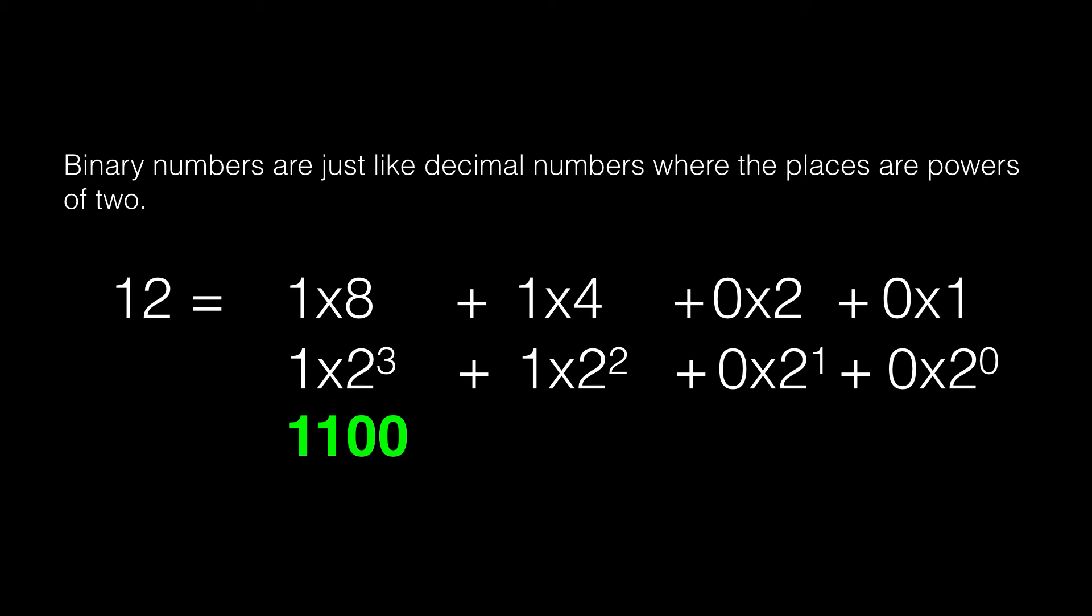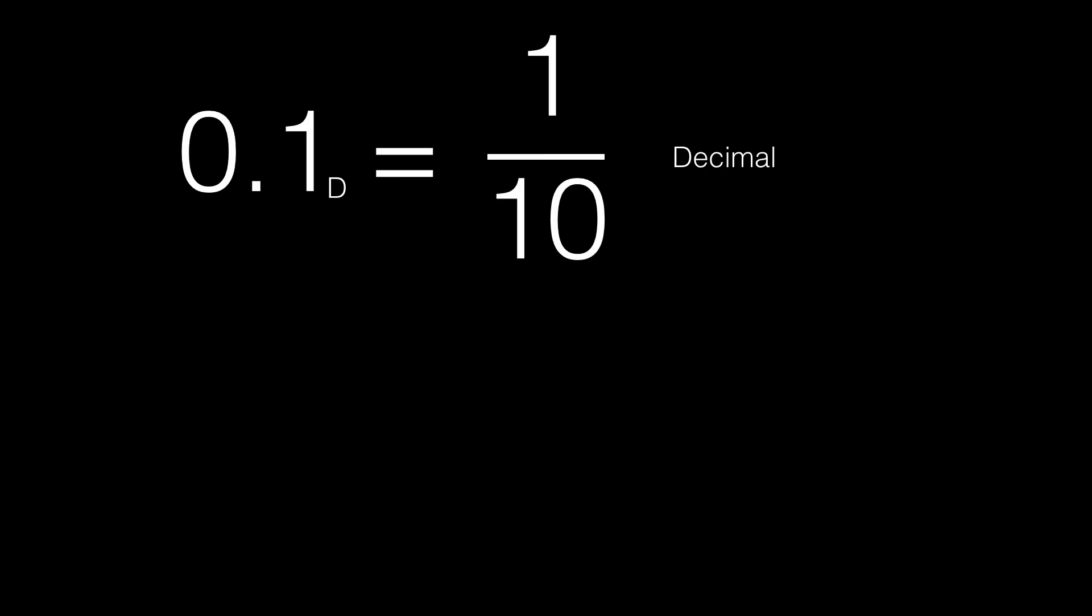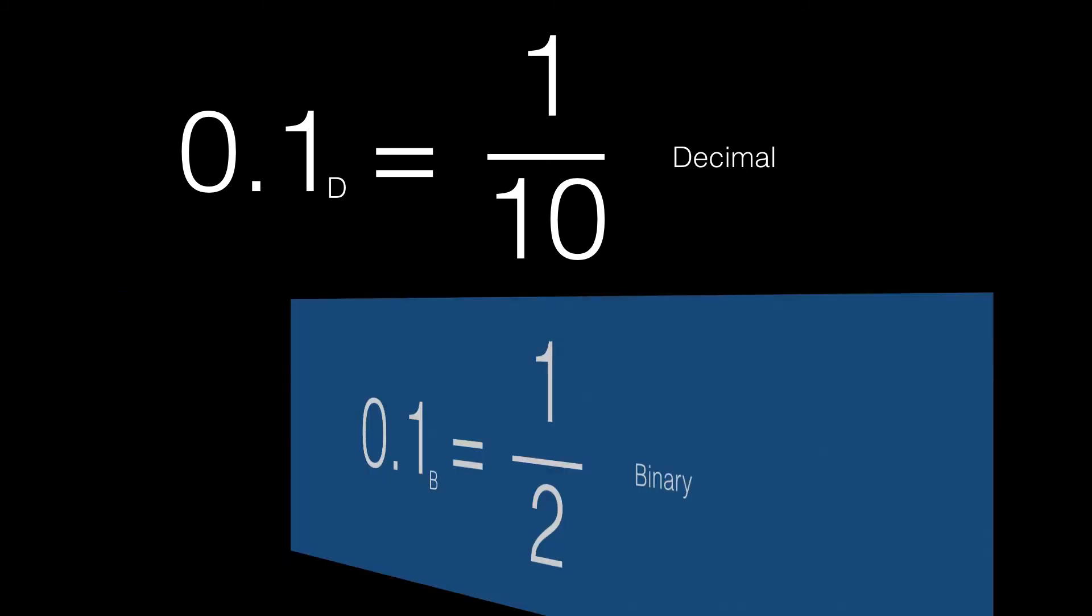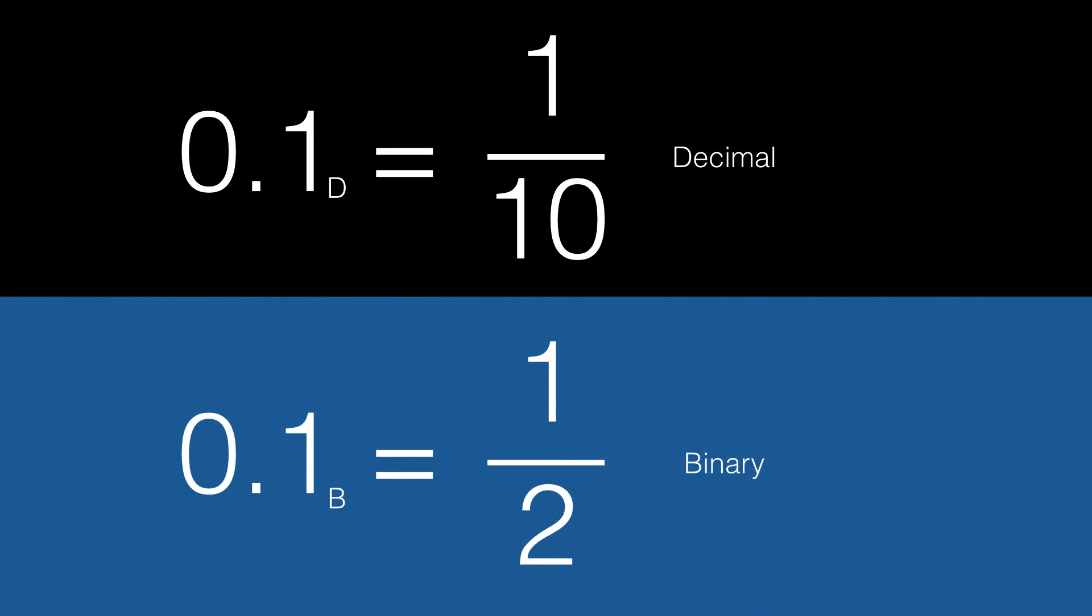Binary numbers work the same way for fractions. Just as 0.1 is really 1 over 10, the first fractional bit for a binary number is 1 over 2. Then it's 1 over 4, 1 over 8, and so on, which are just powers of 2.